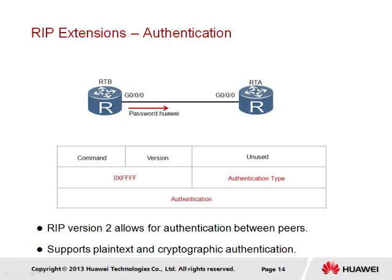In the message header, the address family identifier field is referenced as a string of F values where the message is one of authentication, along with a field to define the authentication type and a 32-bit authentication field representing the authentication password. RTB is sending the RIP authentication message containing the password of Huawei. It is expected that the password match the password set on RTA. If the passwords match, RTA will accept RIP messages from RTB. More recently, stronger methods of authentication have been incorporated into RIP, including encryption, which effectively hides the true password to prevent it from being applied to non-authorized devices.